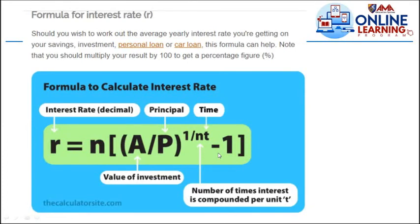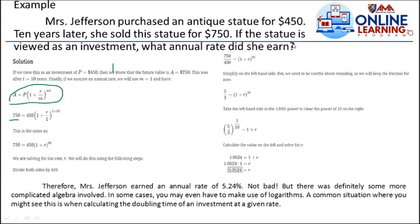In most of our previous examples, we found the future value, how much was earned, and the total money. For this one, the interest rate - what percent did I pay, or what percent should it be? So it says Mrs. Jefferson purchased an antique statue for $450. Nine years later, she sold this statue for $750. If the statue is viewed as an investment, what annual rate did she earn?